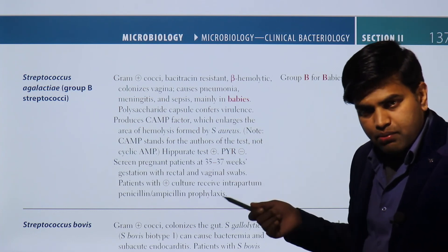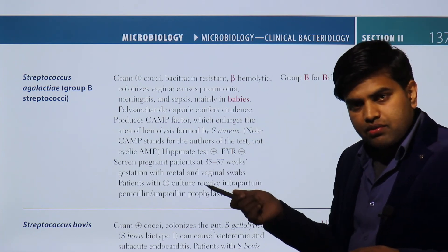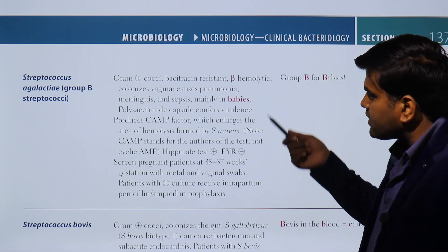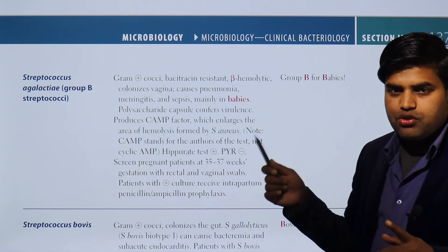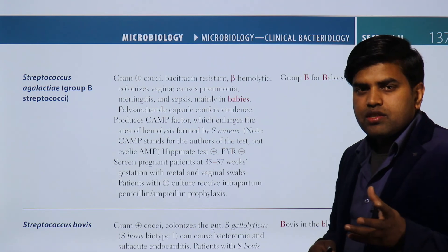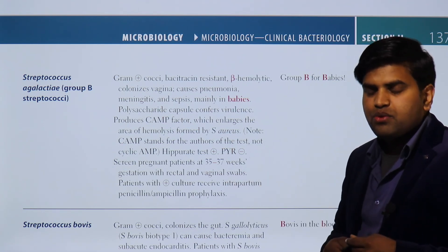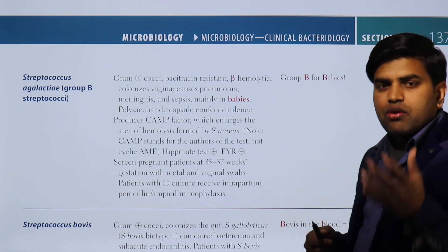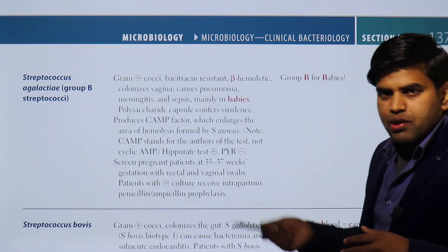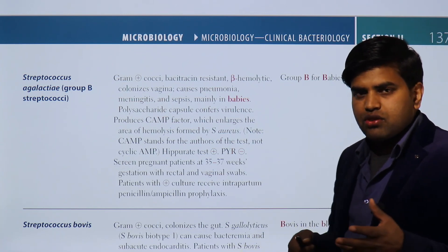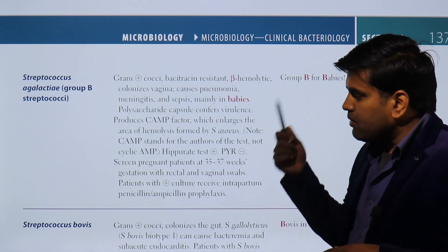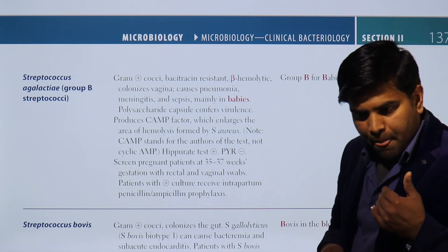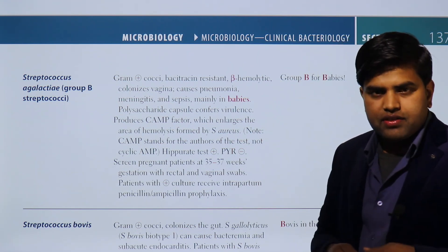In conclusion, Streptococcus pyogenes and Streptococcus agalactiae are both very important organisms. Pyogenes is responsible for numerous diseases including immunological disease, while agalactiae is important for neonatal disease. These organisms are commonly tested in clinical scenarios. If you have any questions about microbiology, immunology, or other subjects, please comment below and I will try to help. Thank you.